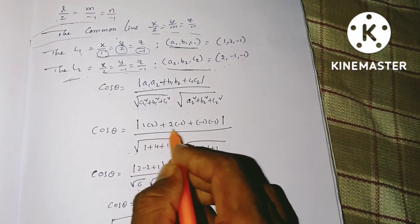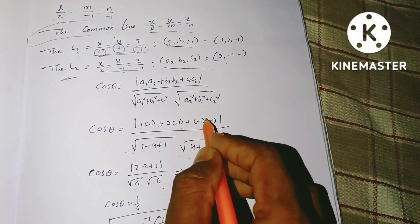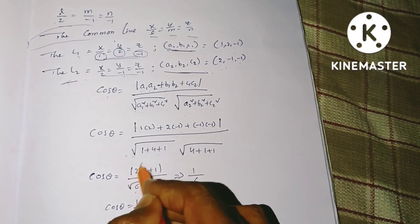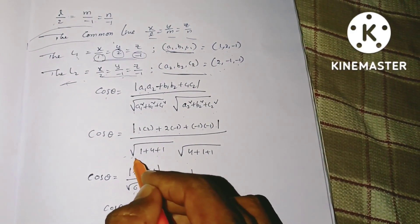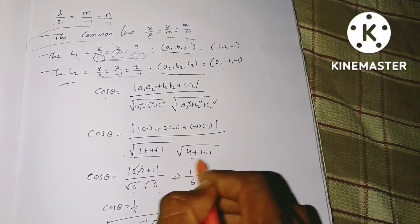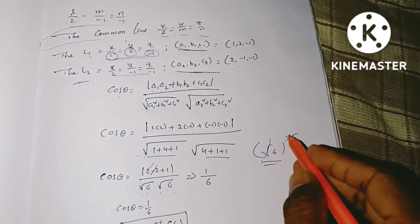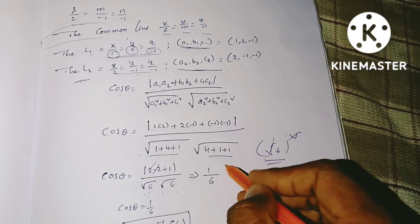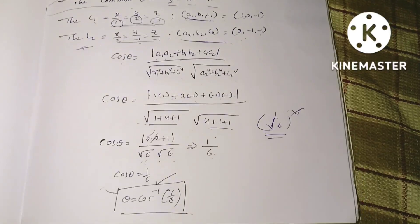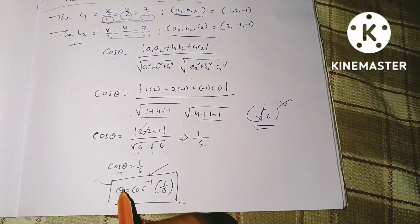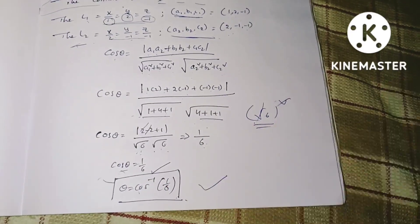So: 1×2 = 2, 2×(−1) = −2, plus (−1)×(−1) = +1. So numerator = 2 − 2 + 1 = 1. Denominator: √6 × √6 = 6. Therefore cos θ = 1/6. So θ = cos⁻¹(1/6). This is the solution.